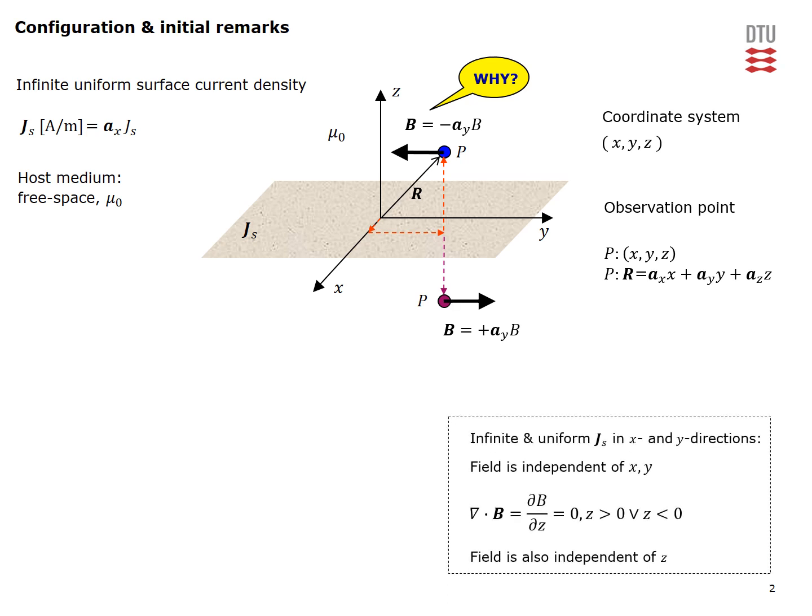Obviously because the current is infinite and uniform in XY directions the field will be independent of XY coordinates. We also know that the divergence of the B field is always equal to 0. When the B field is not a function of XY the divergence will be given by the expression here. Obviously this can only be 0 if the B field is not a function of Z either. So the magnitude of the B field is indeed constant in both half spaces.